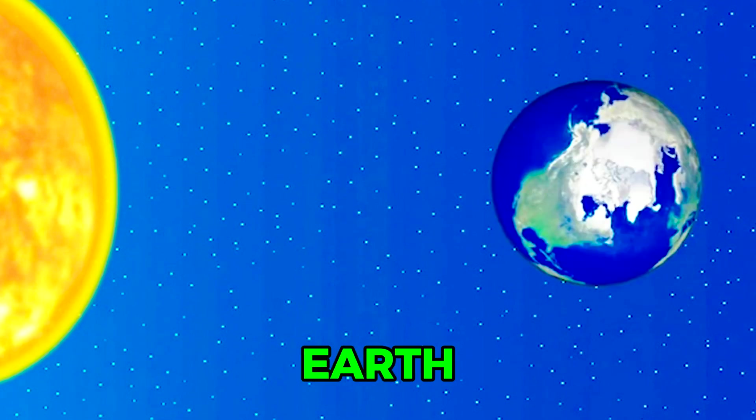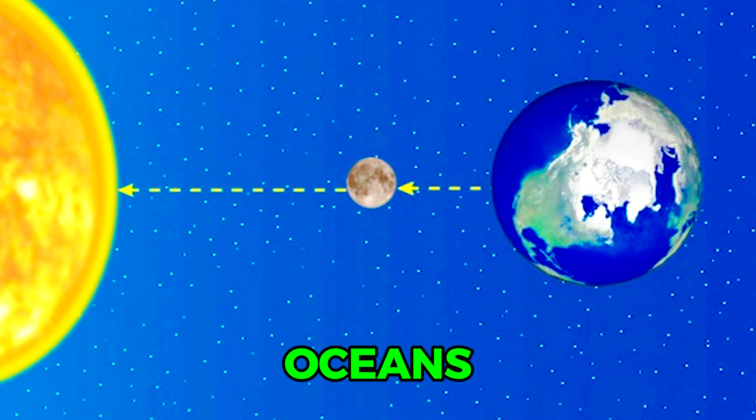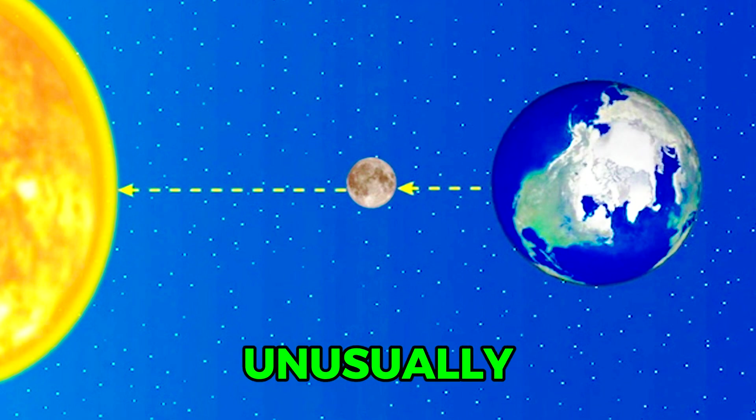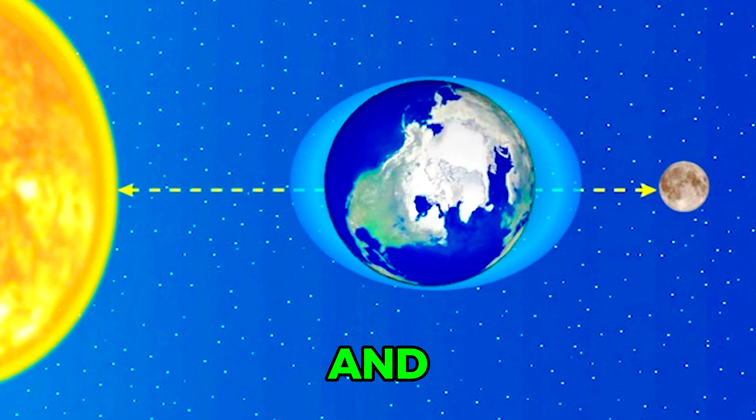When the Sun, Earth and Moon line up with each other, the gravitational pull on the oceans is at its maximum. This alignment causes unusually high tides called spring tides. These tides occur twice a month during the new Moon and the full Moon.